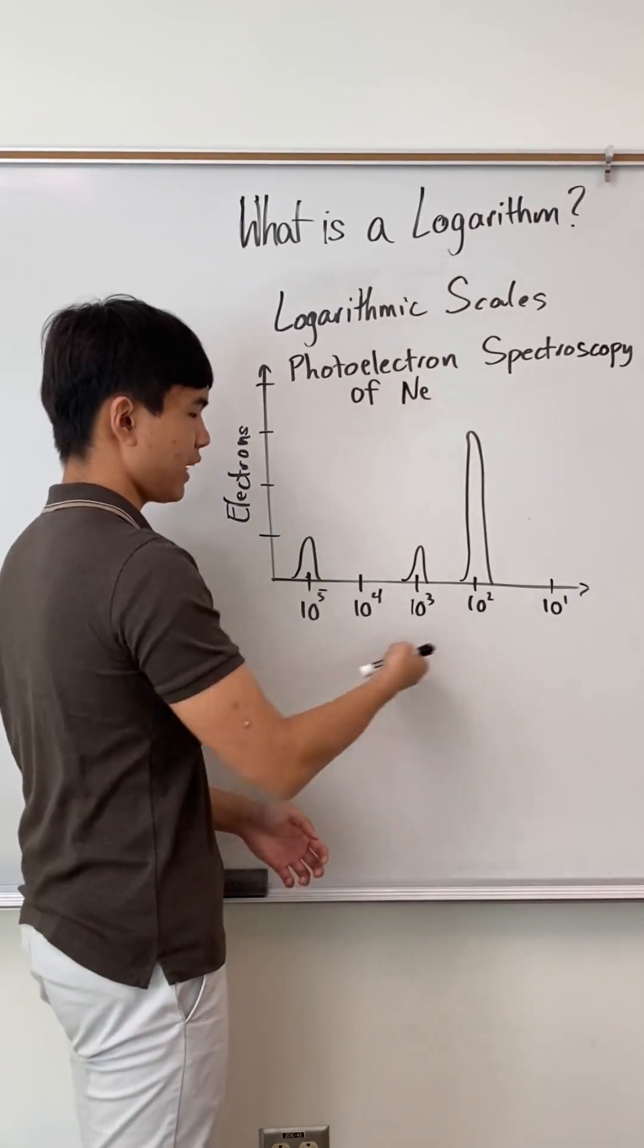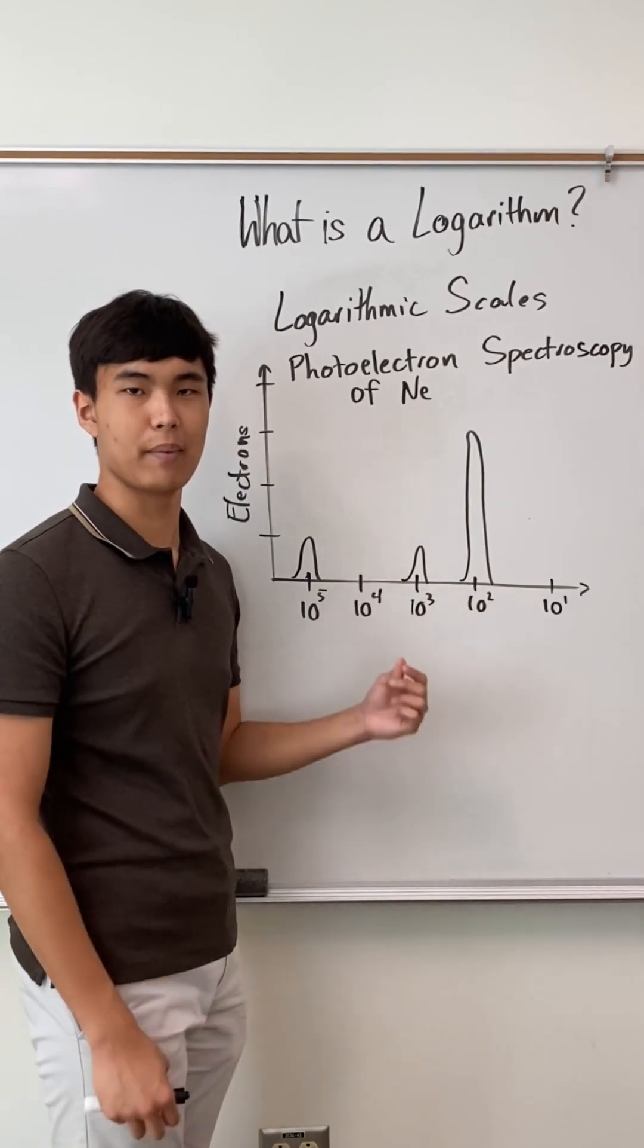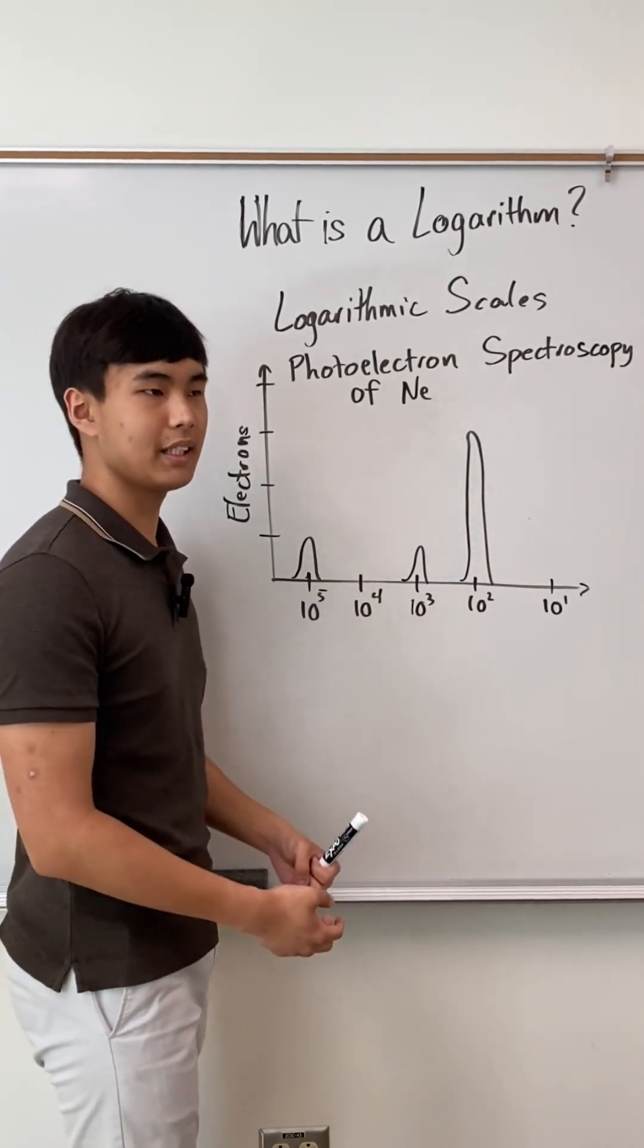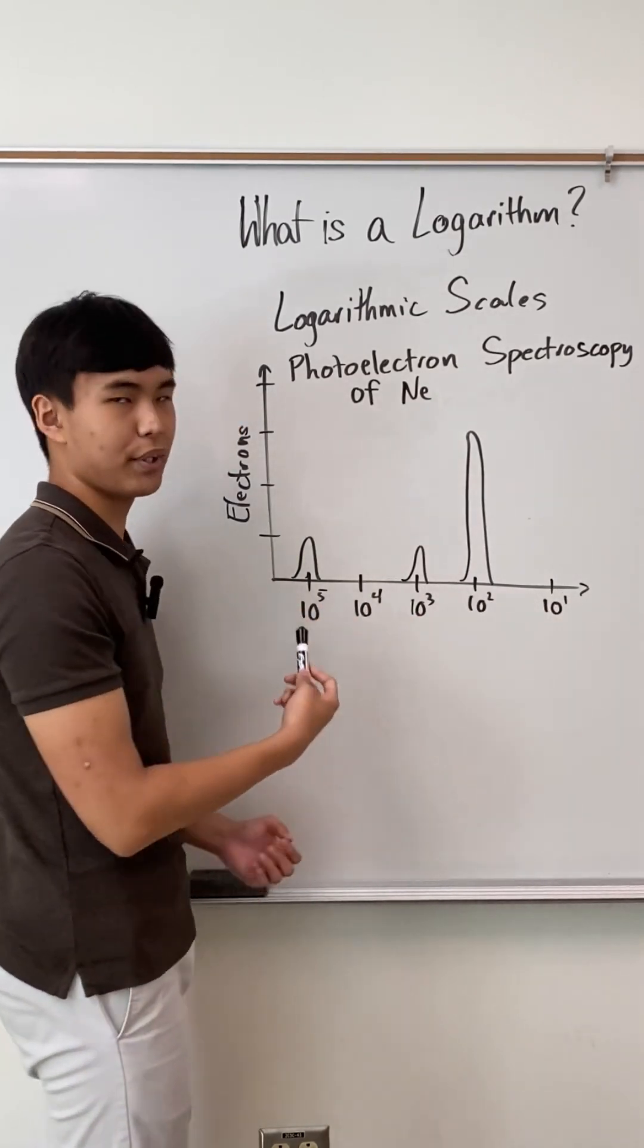Finally, some graphs you see might have a logarithmic scale like this. The purpose of logarithmic scales is to show values that are super far apart in a more compact manner. The difference is, on a logarithmic scale, instead of counting units, we're counting powers of 10. So going like this, each gap is 10 times bigger than the previous one.